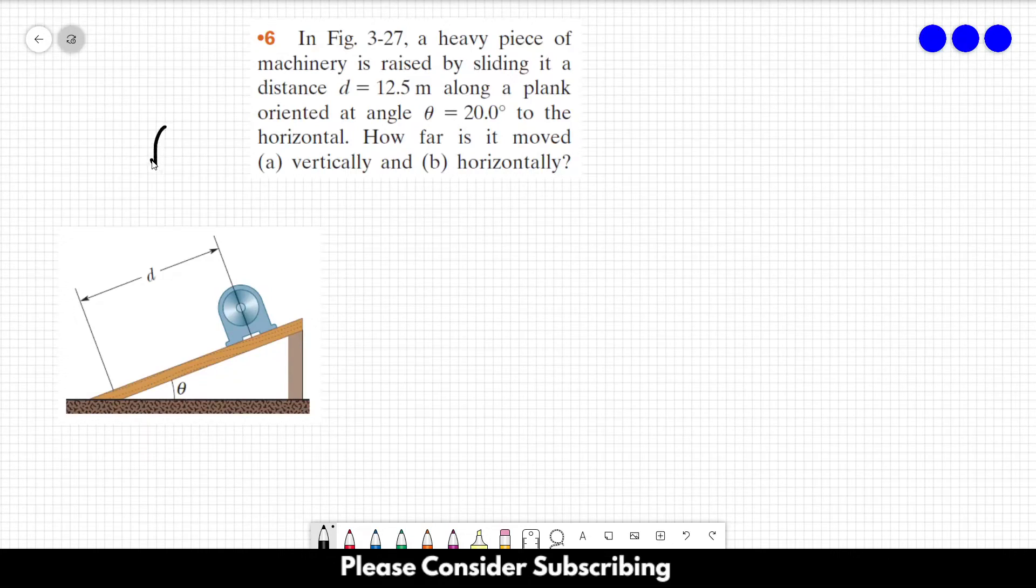Number 6. In this figure over here, a heavy piece of machinery is raised by sliding it at a distance d equals 12.5 meters along a plank oriented at angle theta equals 20 degrees to the horizontal.